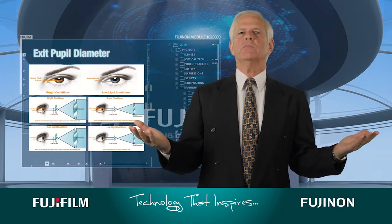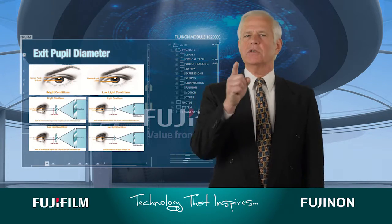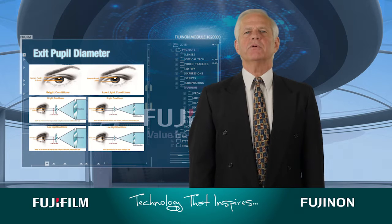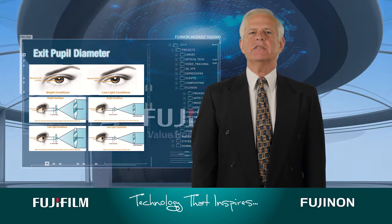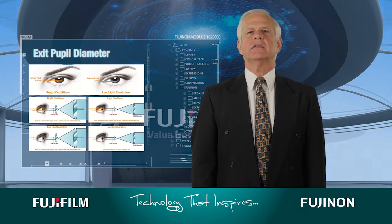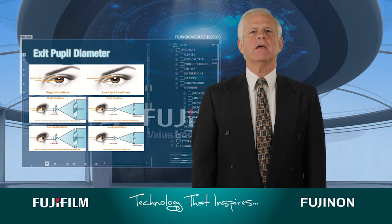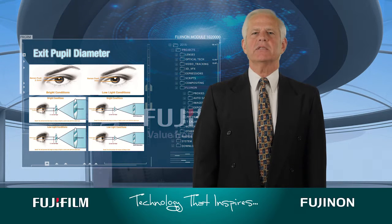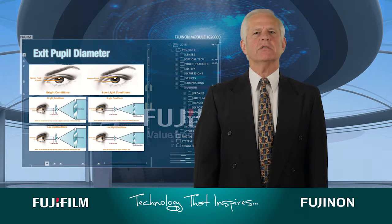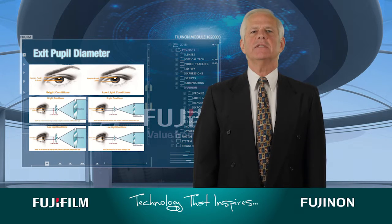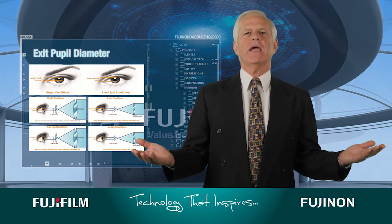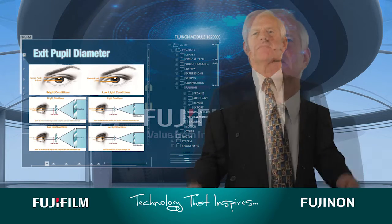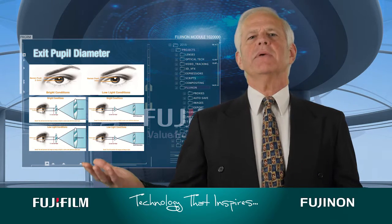The ideal exit pupil diameter depends on your application. Large exit pupils are an advantage in low light conditions. Most compact binoculars with smaller exit pupils are sufficient for the daytime, but quickly degrade as the amount of light decreases.